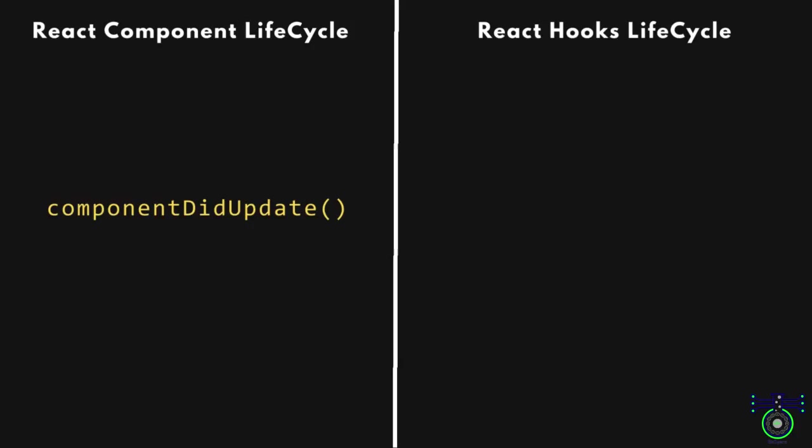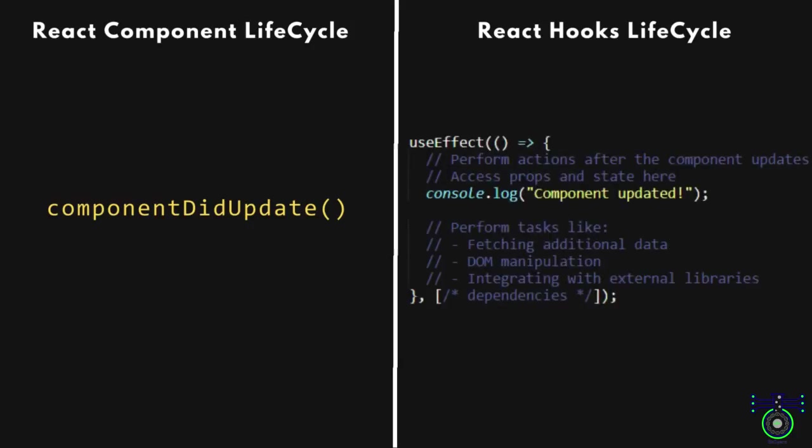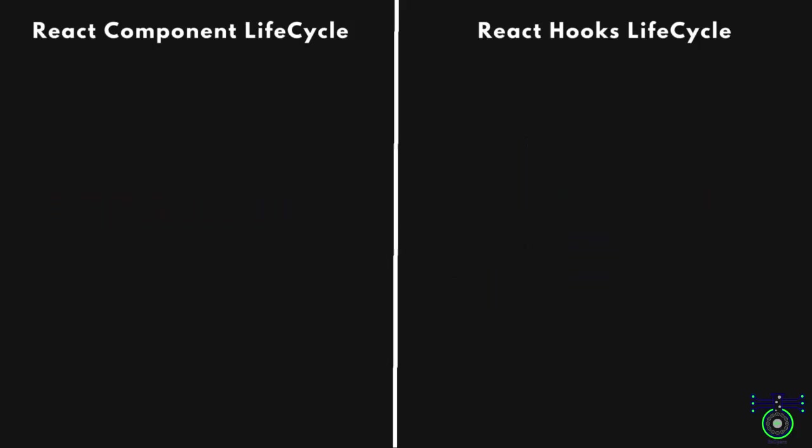Following that is the componentDidUpdate equivalent. Inside the useEffect block we have a console.log that outputs a message indicating the component has updated. The body of the useEffect function is where you perform actions that should happen after the component updates — analogous to the componentDidUpdate lifecycle method in class components. Keep in mind that the absence of dependencies in the dependency array means the effect will run after every render. If there are specific dependencies, include them in the array to control when the effect runs.